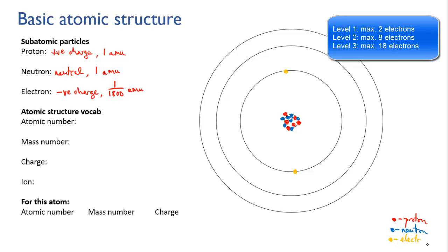Why do we have a total of six? We said that this atom had six protons, and if it's a neutral atom, then the number of protons equals the number of electrons. So we've got six electrons to play with. We've put two in the first level, and we have a remaining four to distribute in the second level, which can hold up to eight.